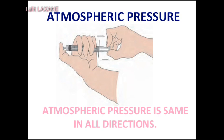If this experiment is repeated holding the syringe in different positions like vertical, horizontal, or inclined, the piston is found to go in to the same extent in all cases. From this, we can infer that atmospheric pressure is the same in all directions.